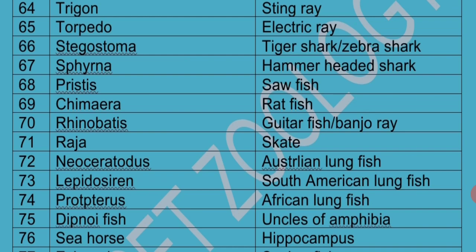Pristis is called Sawfish because its snout forms a structure that resembles a saw. Chimaera is called Ratfish. Rhinobatis is called Guitar Fish or Banjo Ray. Raja is commonly called Skate.